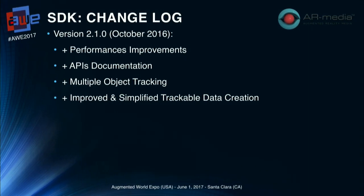Finally, just in October last year during AWE Europe, we announced a new version that had some performance improvements, a more robust tracker, and more complete API documentation. The most important features we added were multiple object tracking — so you can track and recognize several objects at the same time — and an improved, simplified workflow to create the trackable data.